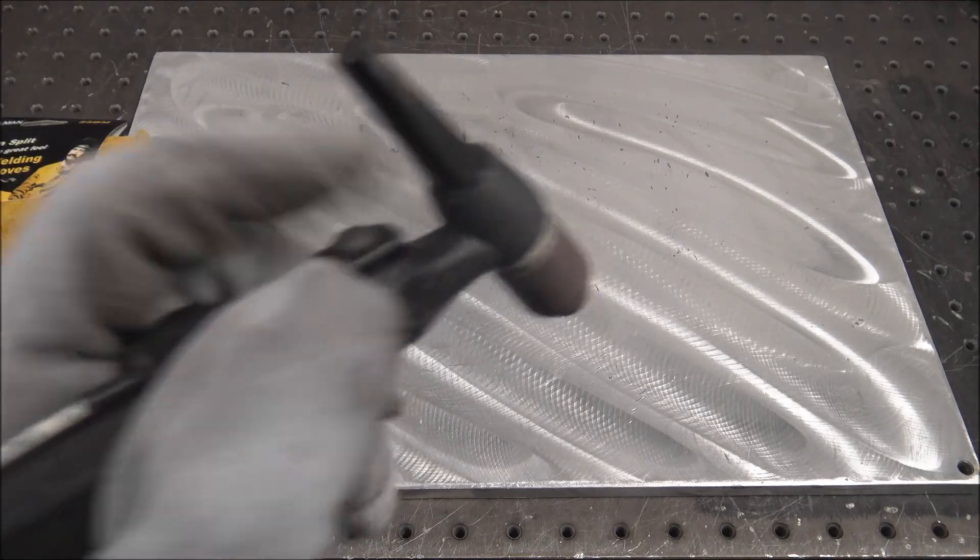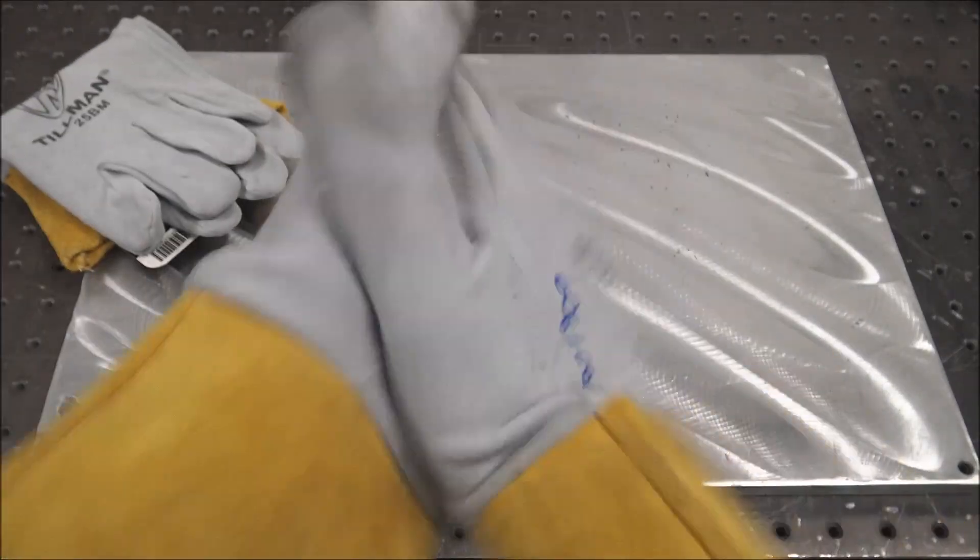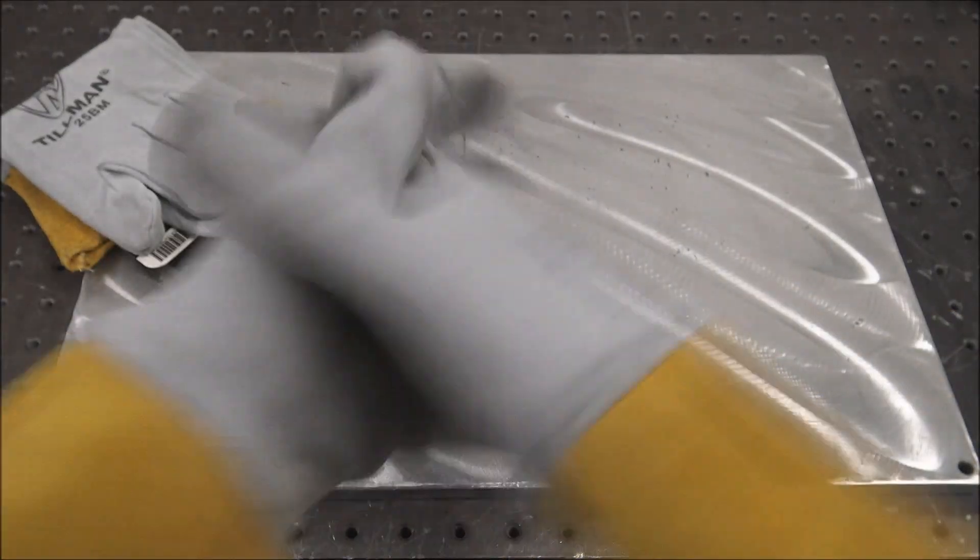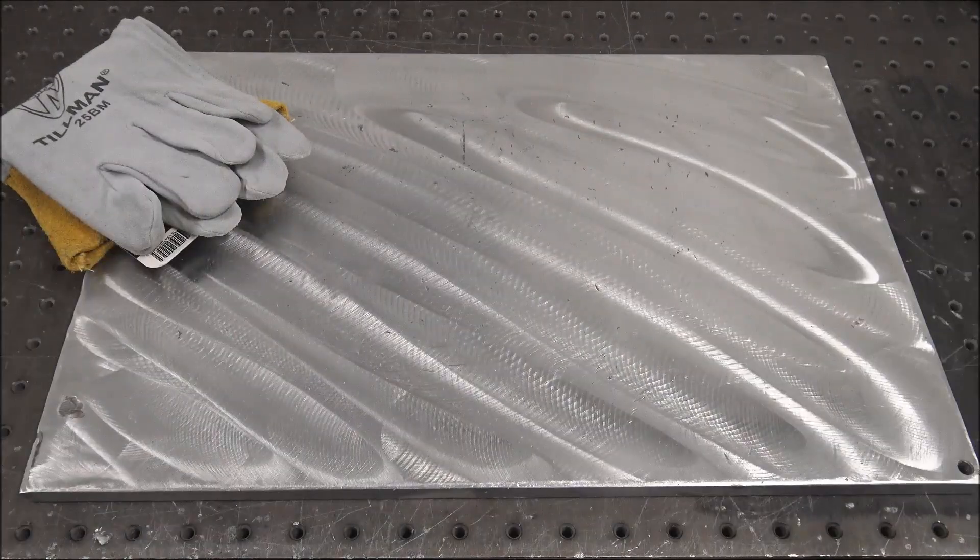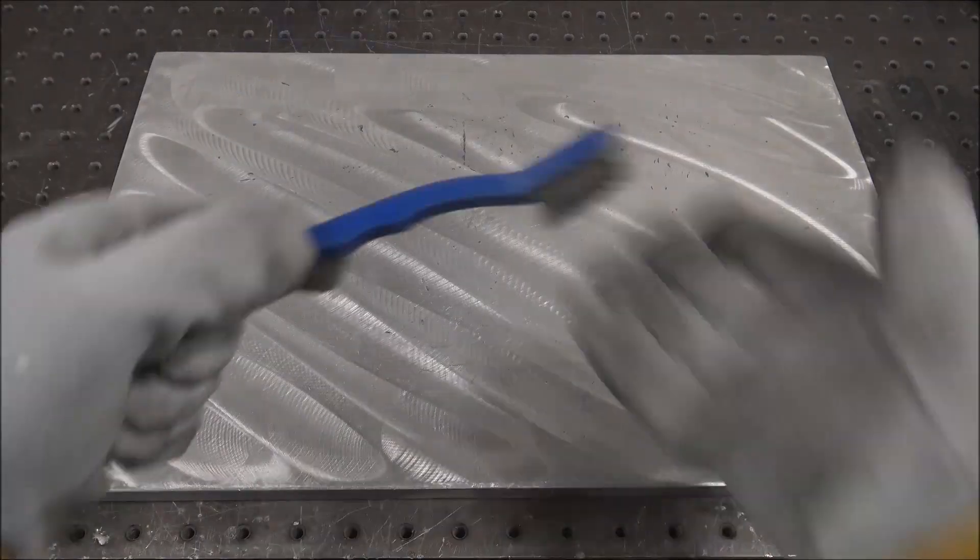They do have a lot of lint on them when you first buy them, so I just recommend going over a trash can for about a minute or two and getting all the lint and fuzzies off so it doesn't get in your welds or on your parts.